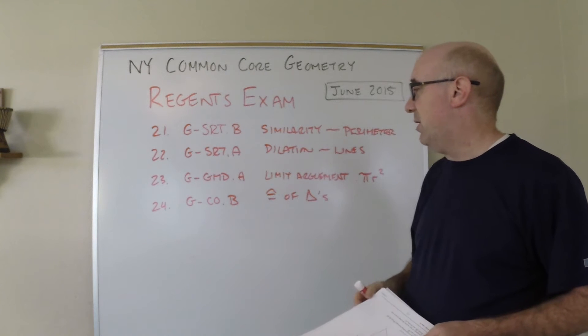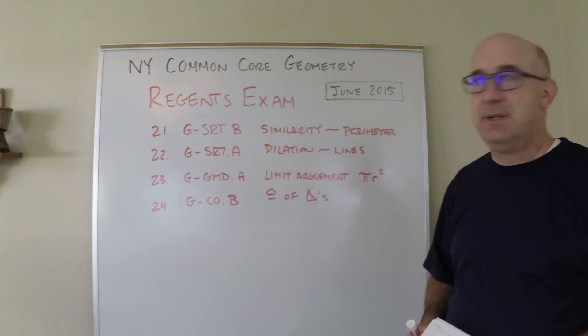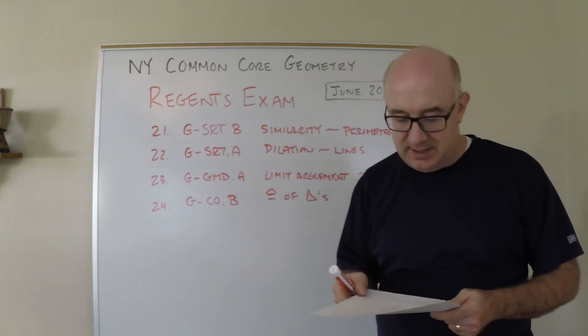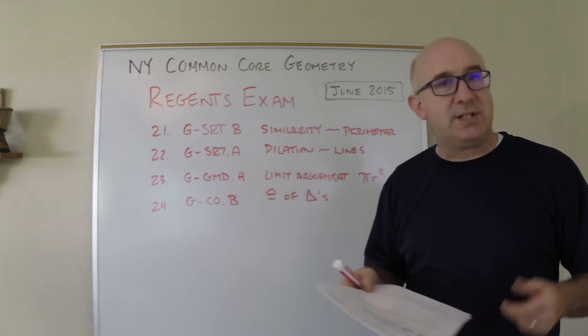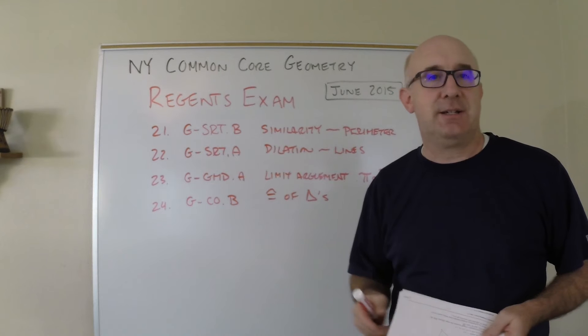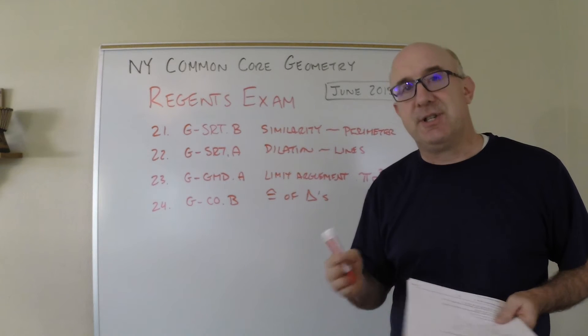And last one, 24, is congruence, and B is the cluster about congruence. Here we are given some information about triangles and it says what is sufficient to know to make them congruent. So a classic congruence problem, well handled in what we do as well. Let's take a look at the questions now and the materials that support them.